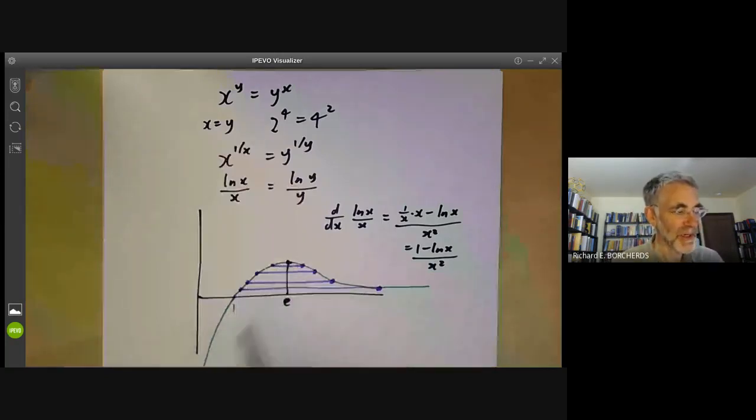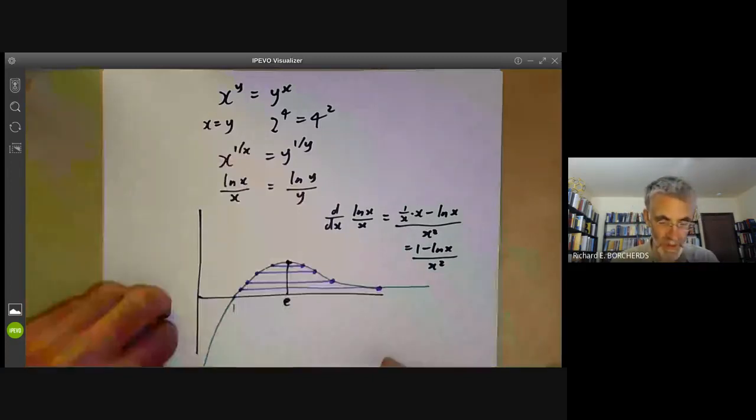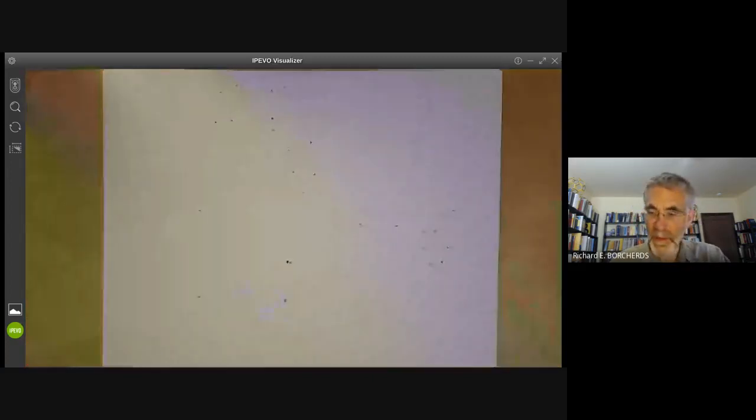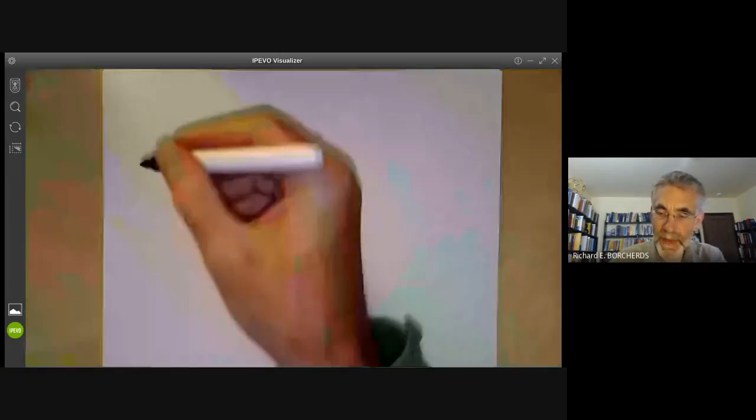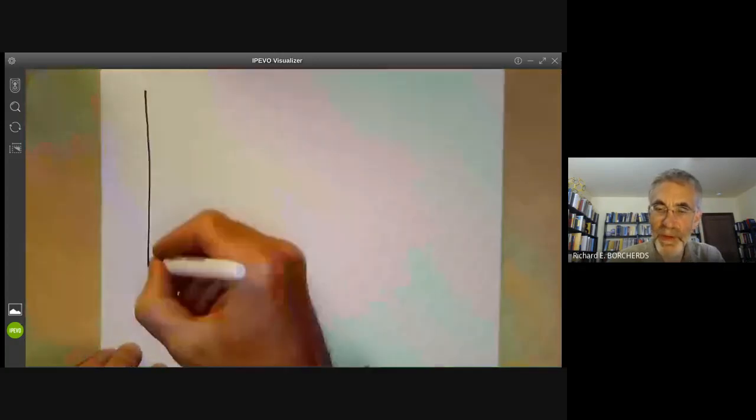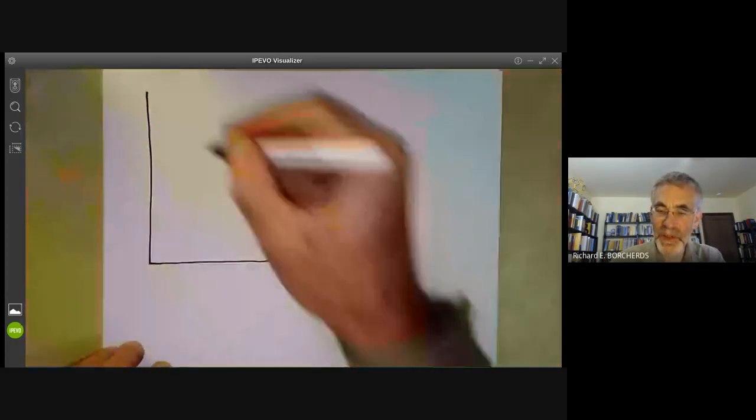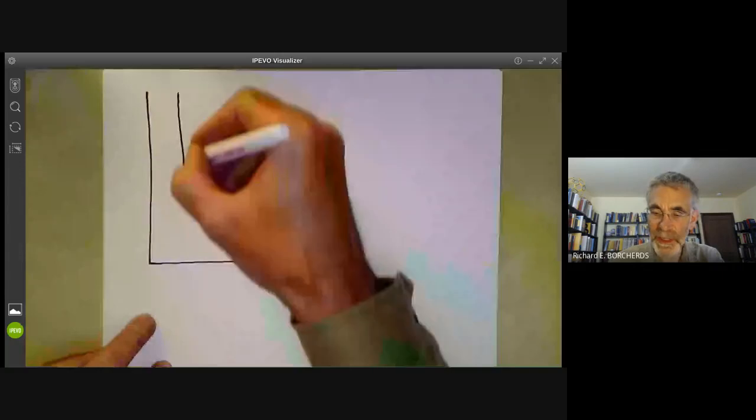So with this information, we can now plot the points where x to the y equals y to the x. And the answer we get looks like this. We just take x and y axis